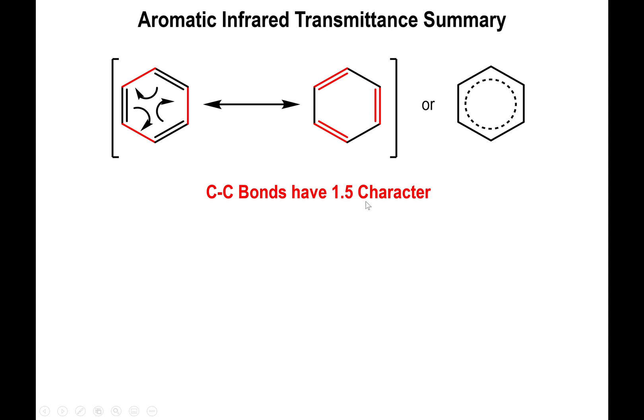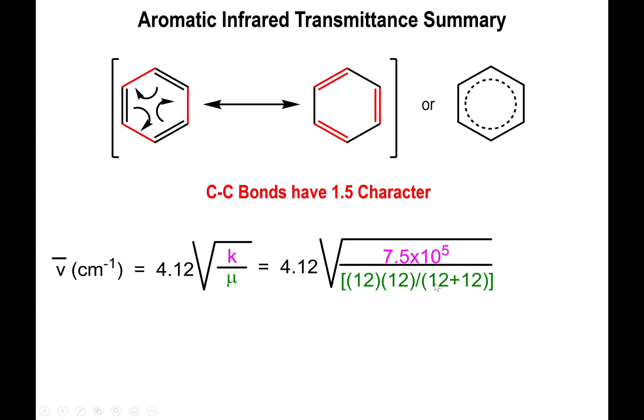All right, so if we go with this premise that the carbon-carbon bonds throughout the benzene ring are more like one and a half bonds as opposed to double bonds themselves, then we can look at the formula and do some calculations. Now the k value you may remember is 5 times 10 to the 5 if it's single bonds and it's 10 times 10 to the 5 if it's double bonds.